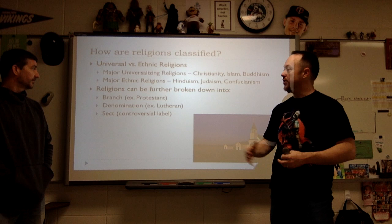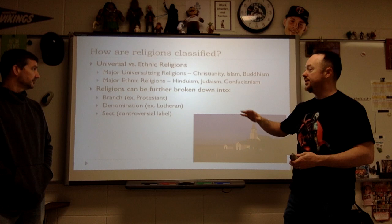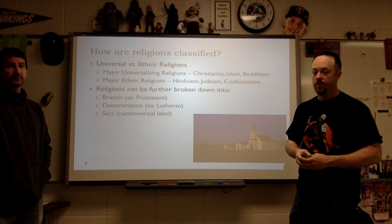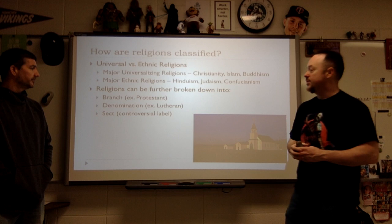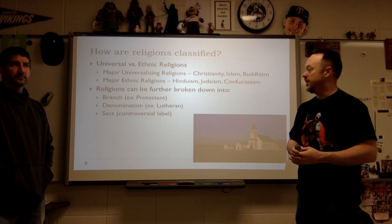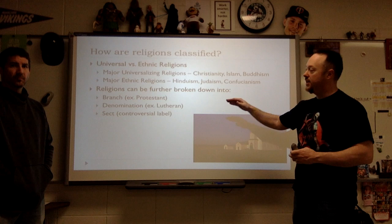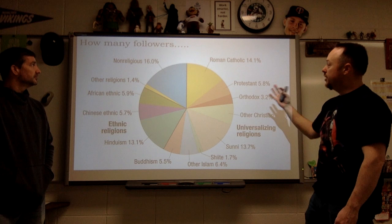Universalizing religions tend to get broken down further. We look at branches, denominations, and sects. Using Christian examples: there are three major branches in Christianity. We look at all kinds of different denominations. And then we have sects — sometimes controversial — which is a small group of followers in a religion. That may grow into a denomination, and eventually may become a branch. Those are the three levels for breaking it down.